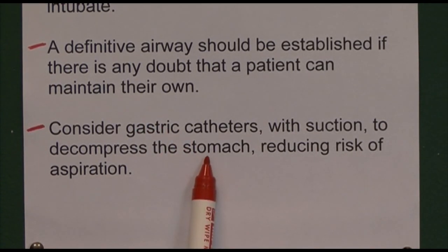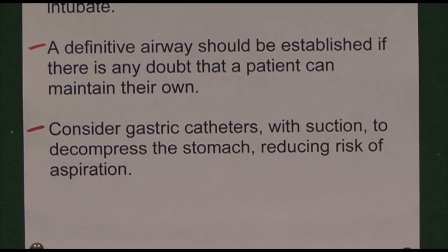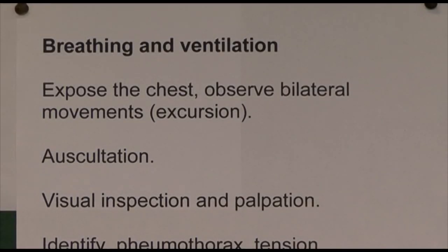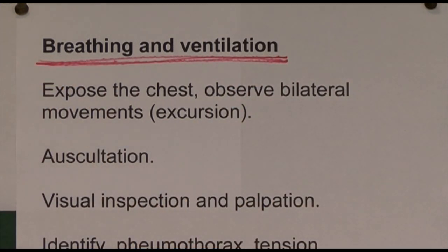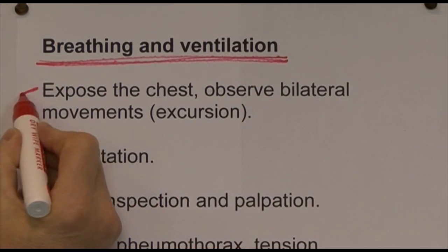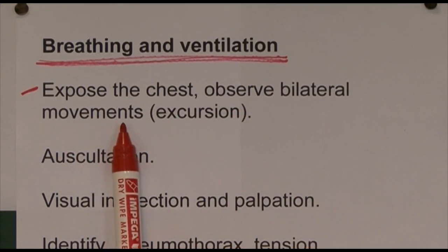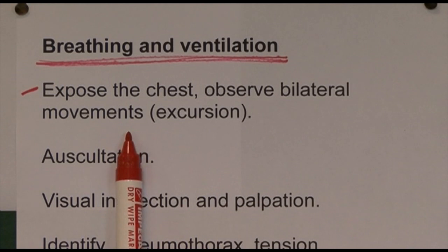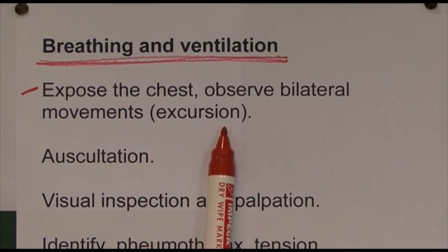Thinking now about the next priority: B for breathing and ventilation. Expose the patient's chest to assess them. We observe for bilateral chest movements — normal chest movements should be bilateral, called chest excursion — so we're looking for bilateral normal chest excursion.